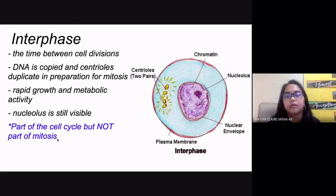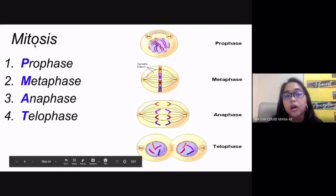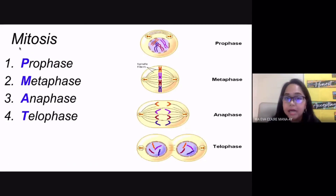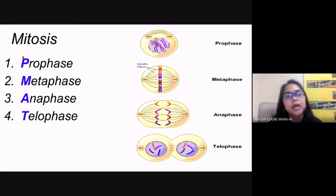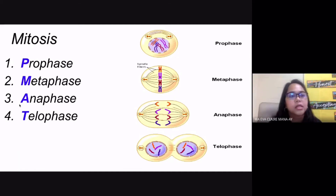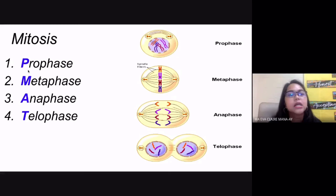Mitosis is one form of the M phase, one form of karyokinesis. Meiosis will be discussed in following weeks. Mitosis has four major stages: prophase, metaphase, anaphase, and telophase. To remember these easily, use the acronym PMAT.